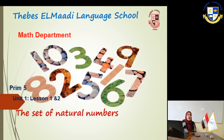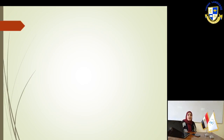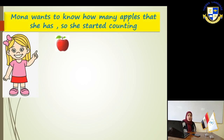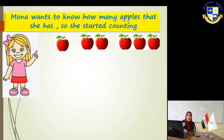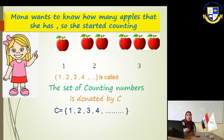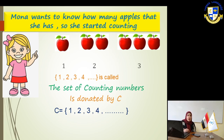Now, if I want to count the number of students inside the class, I will start counting by 1, 2, 3, 4, 5 and so on. This set of numbers is called the set of counting numbers — the numbers which are used to count, like 1, 2, 3 and so on. This set is denoted by the letter C, where C is the set of {1, 2, 3, 4, ...}.